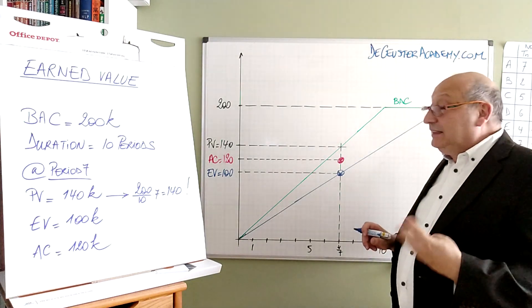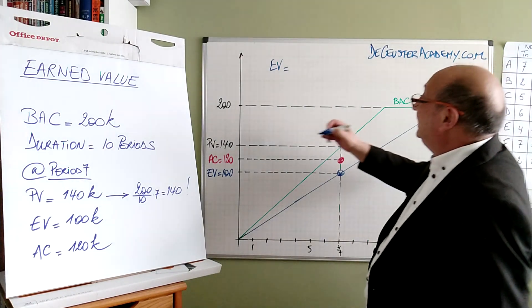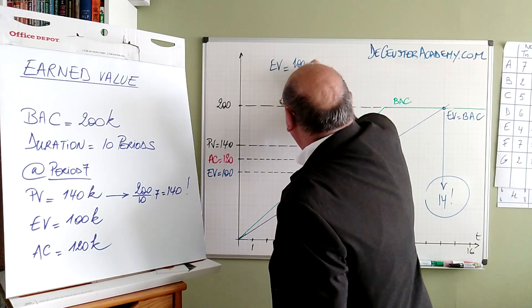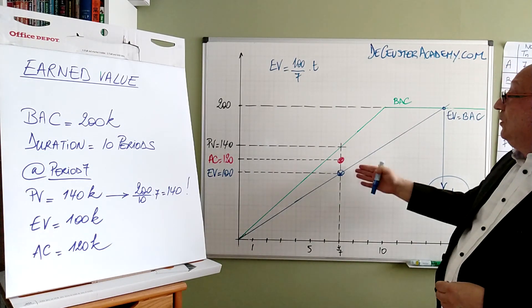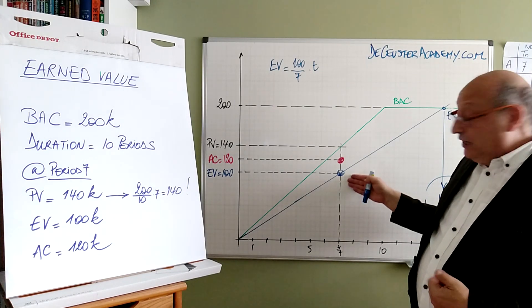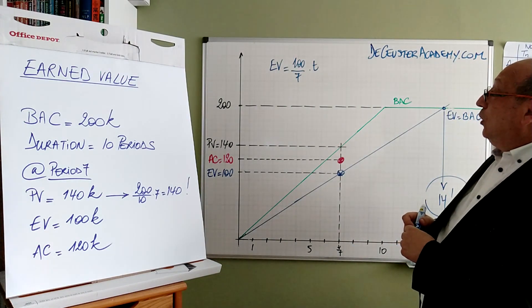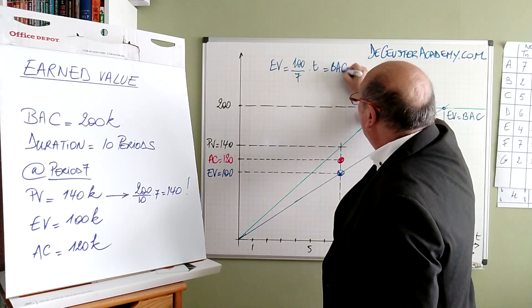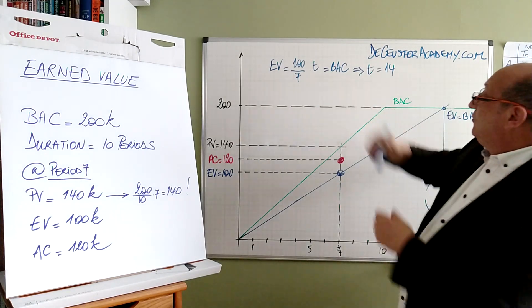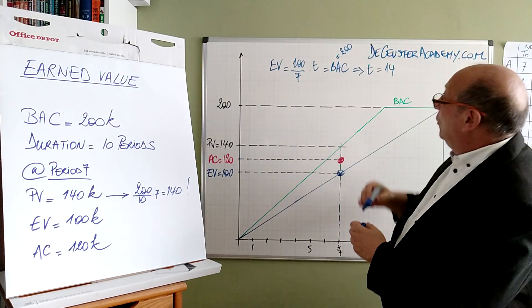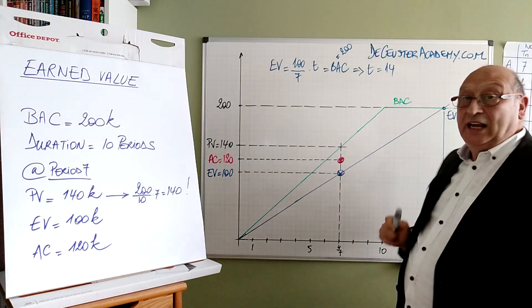But I can say that the relation of the EV with time, EV is 100 divided by 7 times the time. We want to know how many. So this is the relationship between earned value and the time multiplied with the time. So we want to say that this is equal to the BAC, so we find here that the time is 14. We have the BAC is 200, so we have T is equal to 200 times 7 divided by 100 is 14.